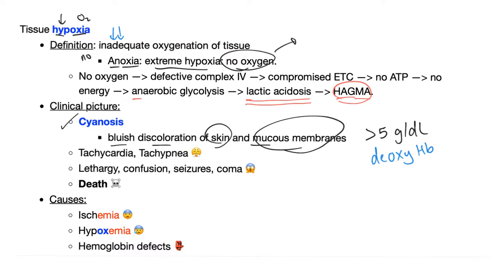Other clinical pictures of hypoxia: tachycardia and tachypnea. Your body is trying to compensate — breathe in more, maybe then we will have enough oxygen; pump more blood, maybe then we can deliver more oxygen to tissue. Also lethargy, confusion, seizure and coma because your brain is not getting oxygen. And even death.